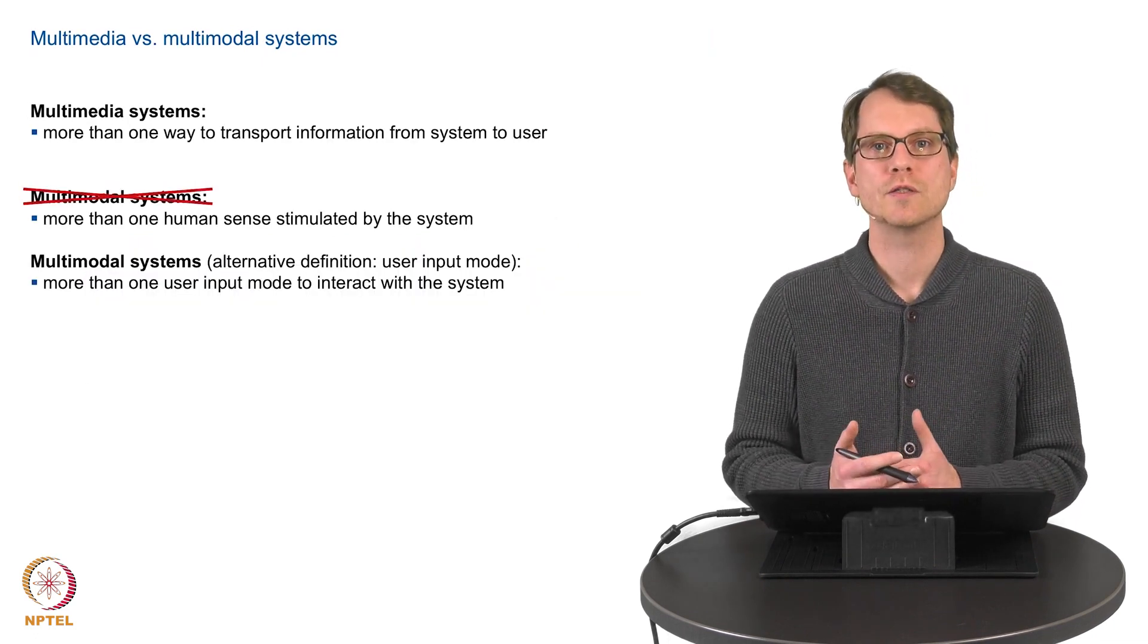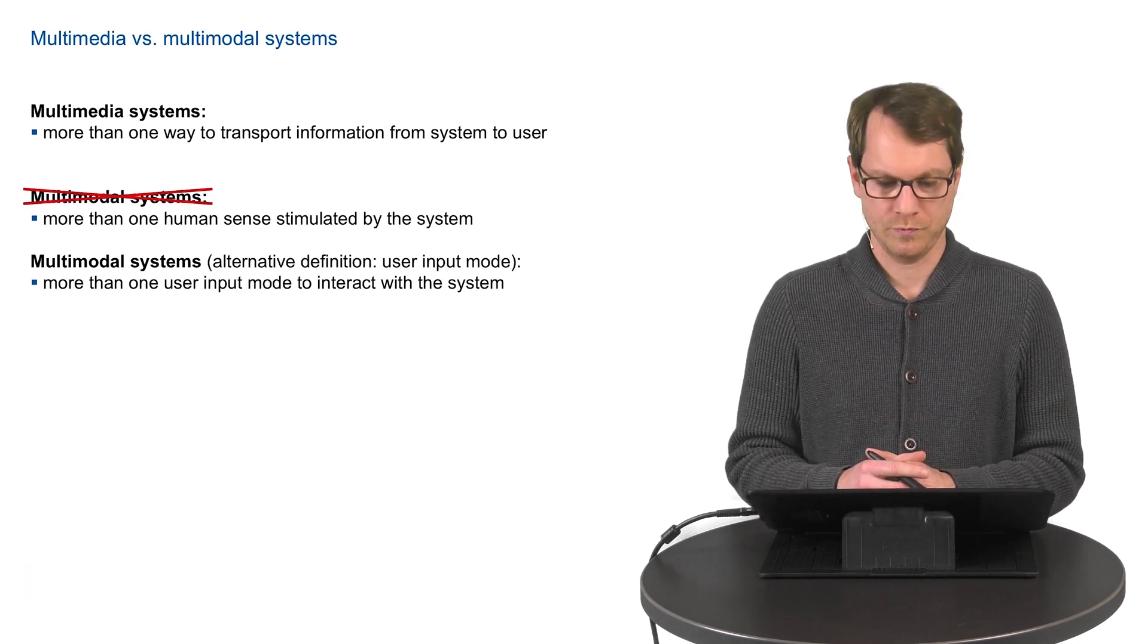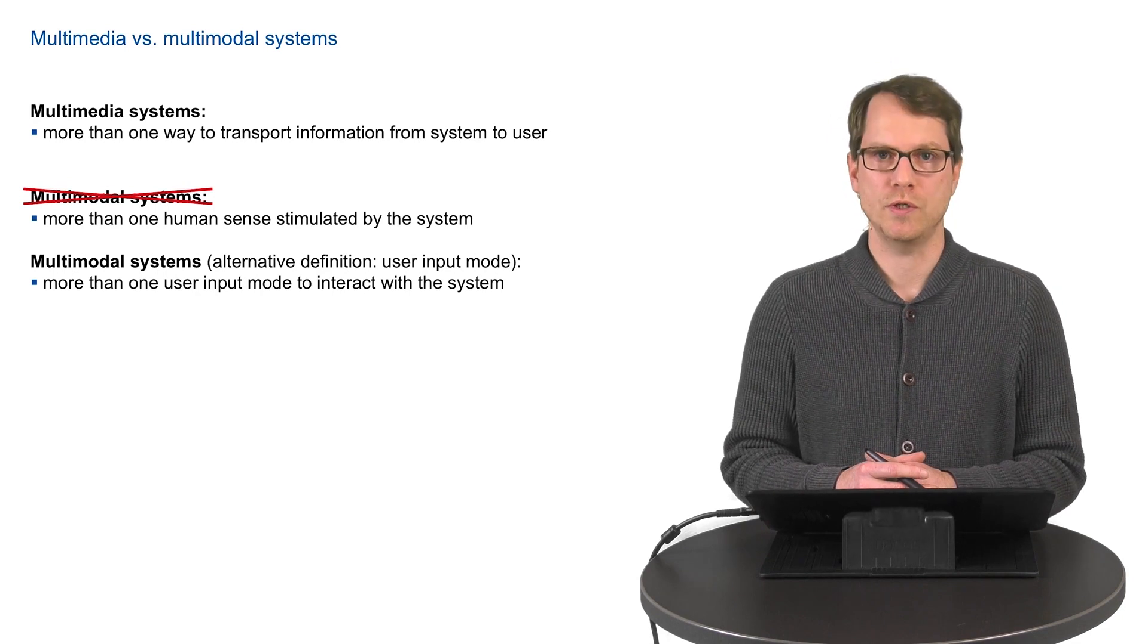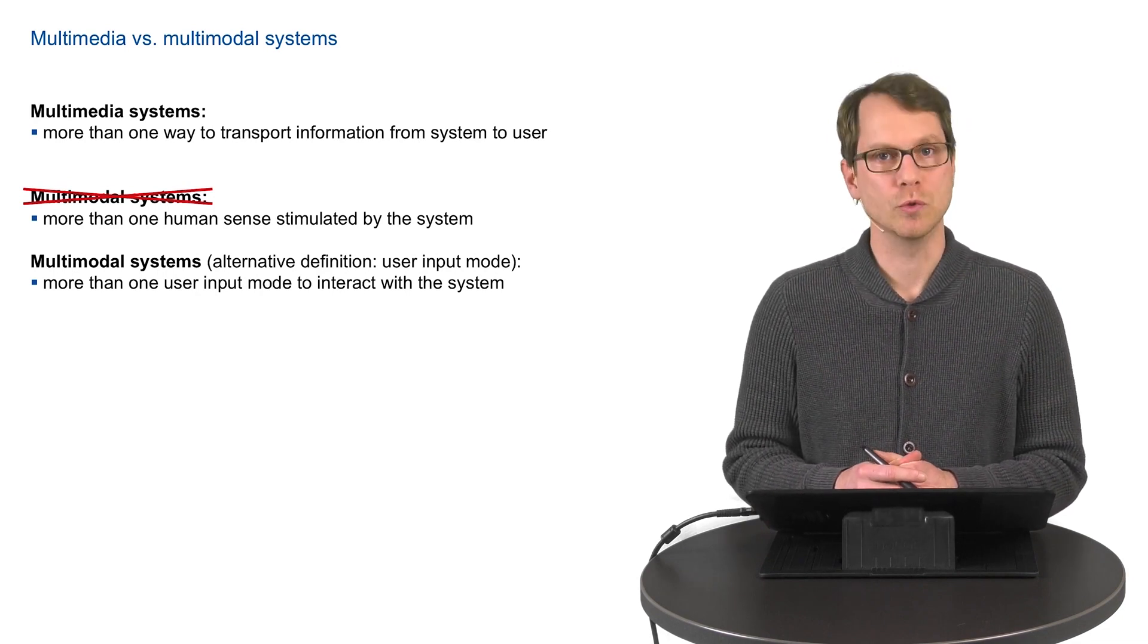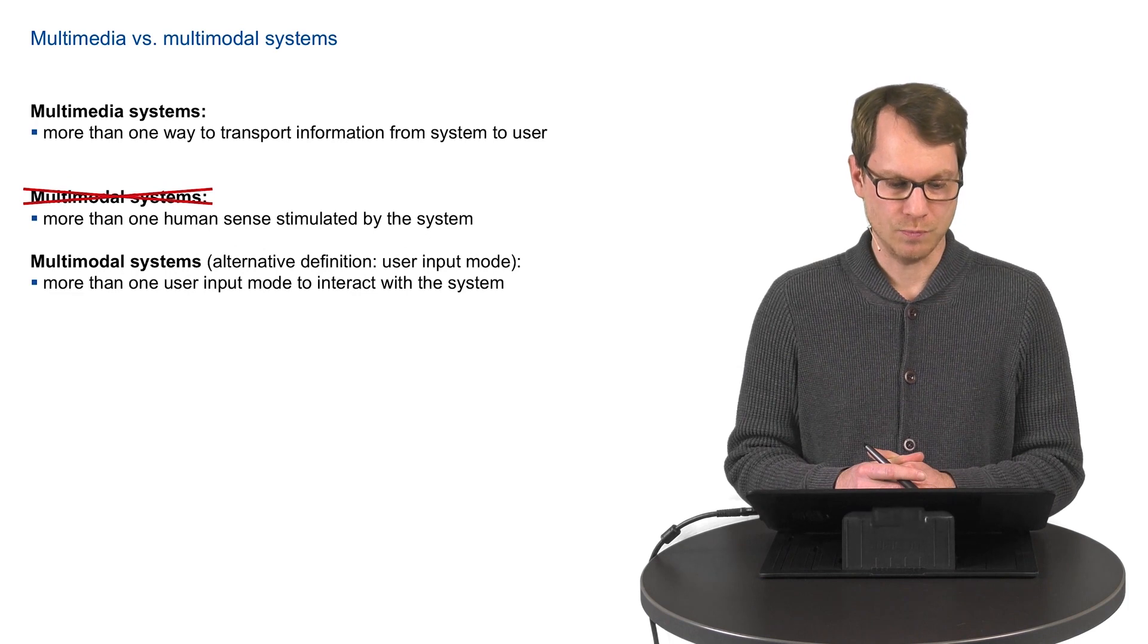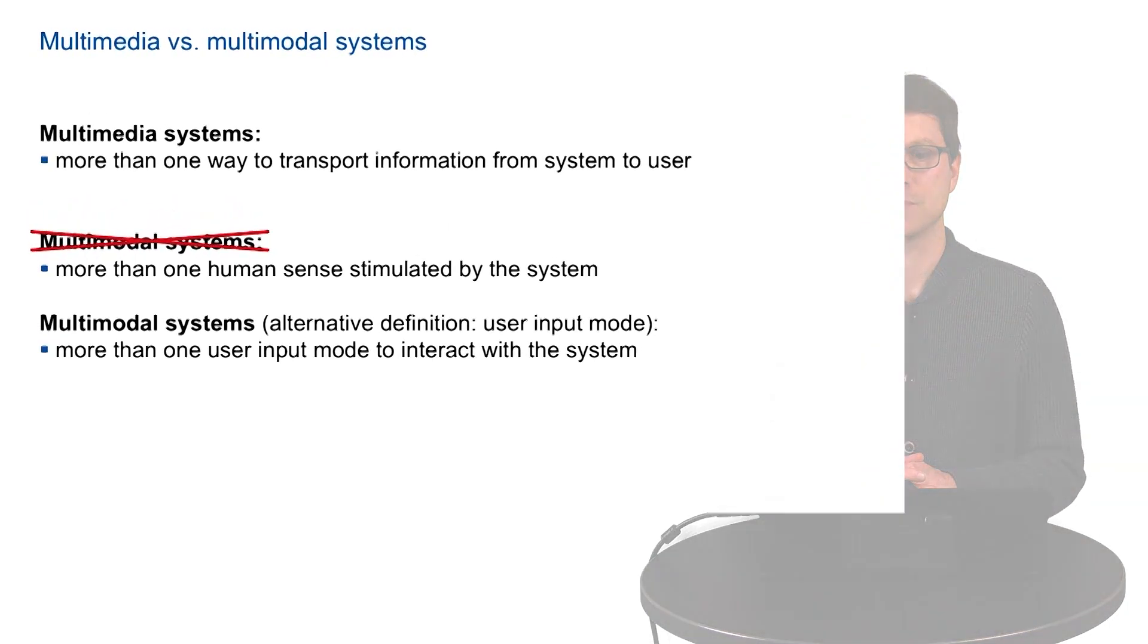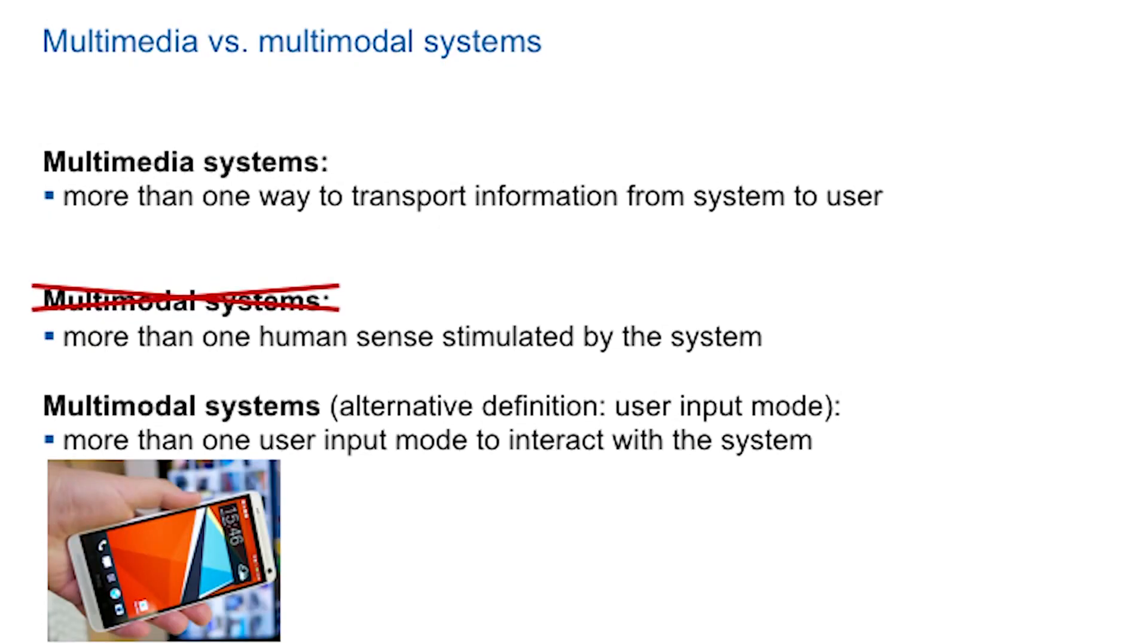So let's follow the alternative definition. A modality is a user input mode to interact with a system. Following this, a multimodal system would be a system that provides more than just one user mode to interact with it. Again, a smartphone would be a multimodal system just because it offers a touch screen for touch, but also sensors for 3D, three-dimensional gestures, and also microphones for speech, for example.